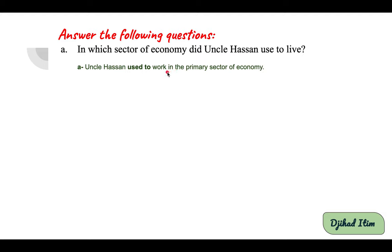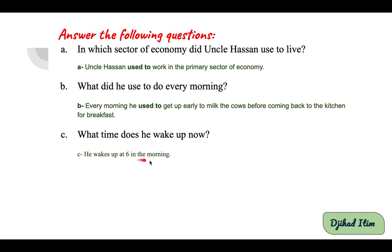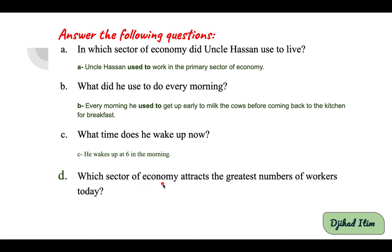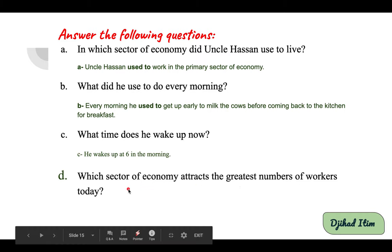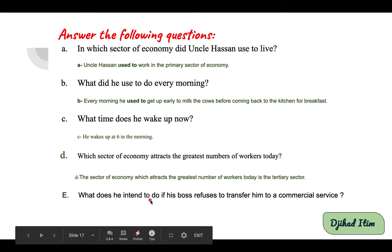Uncle Hassan used to work in the primary sector of economy. Question B: what did he use to do every morning? Every morning he used to get up early to make the calls before coming back to the kitchen for breakfast. Question C: what time does he wake up now? He wakes up at six in the morning. Question D: which sector of economy attracts the greatest number of workers today? The tertiary sector.